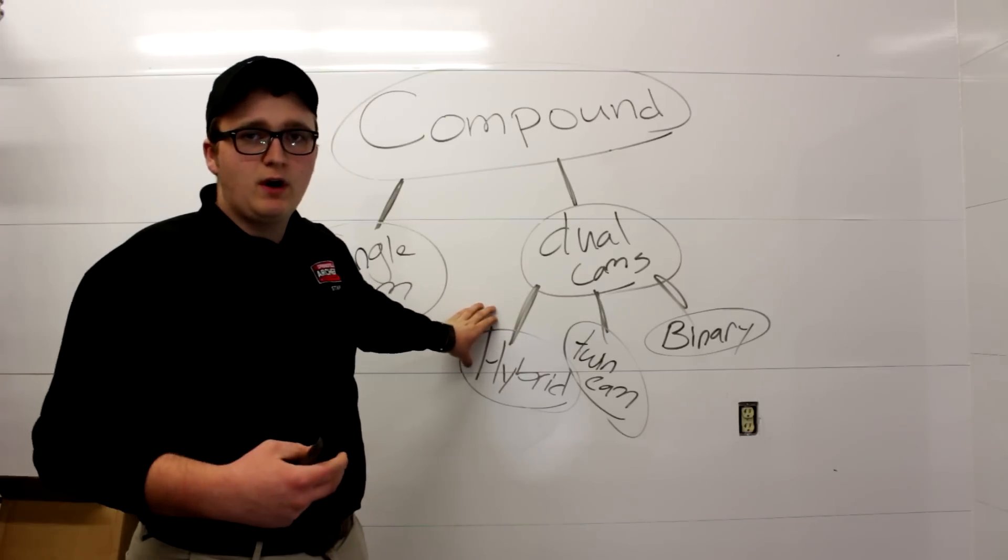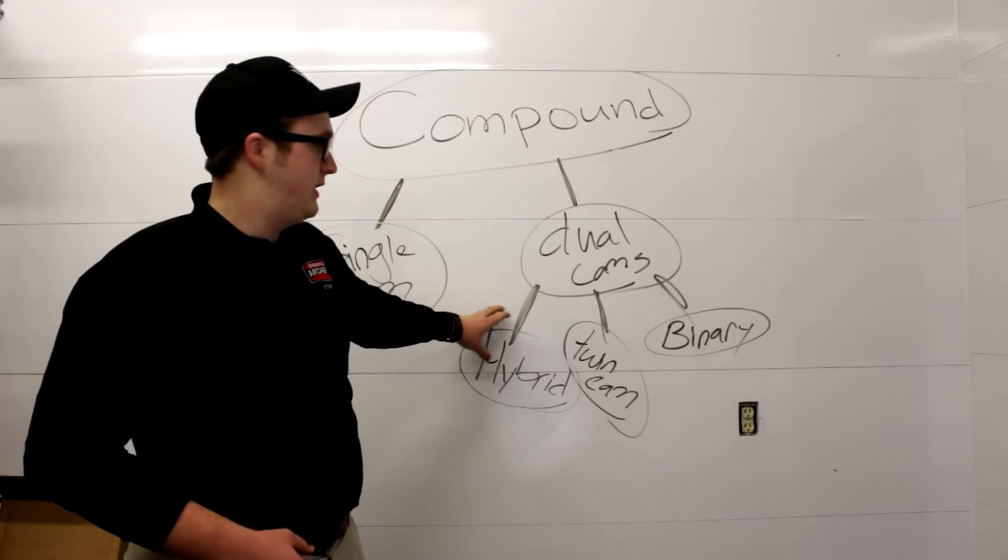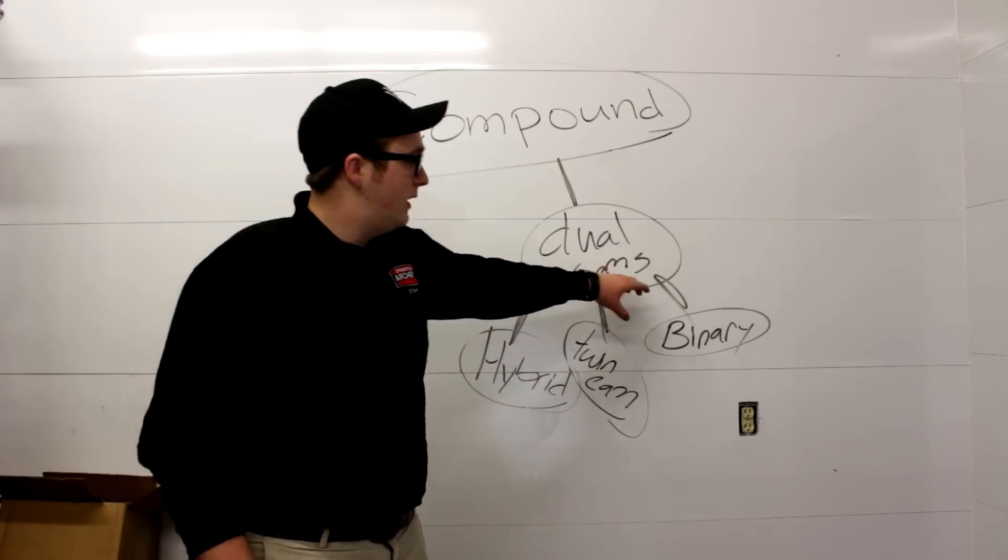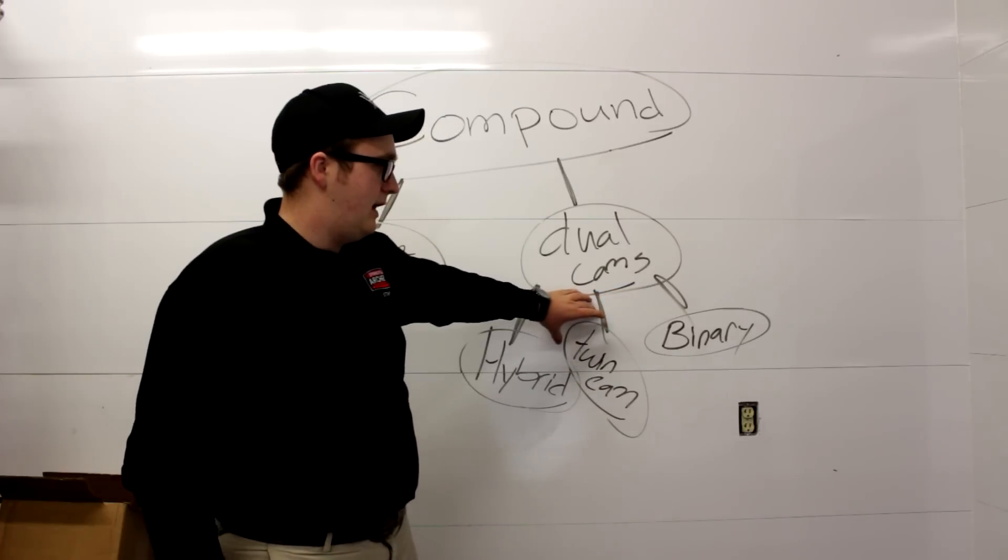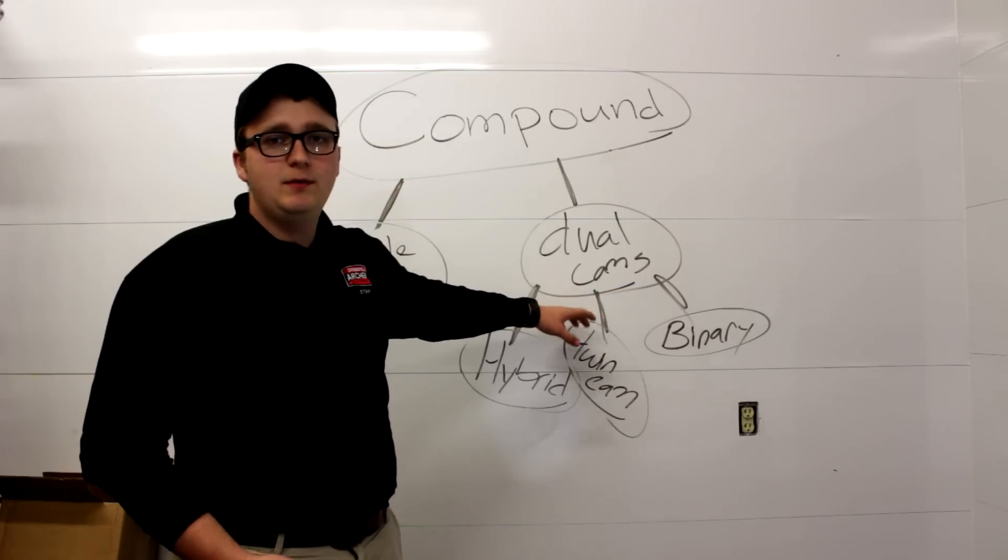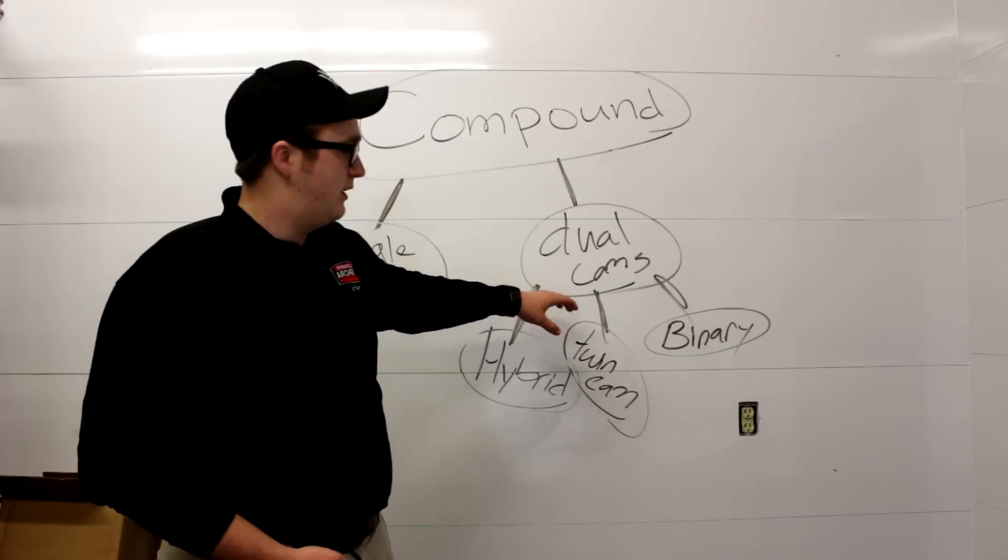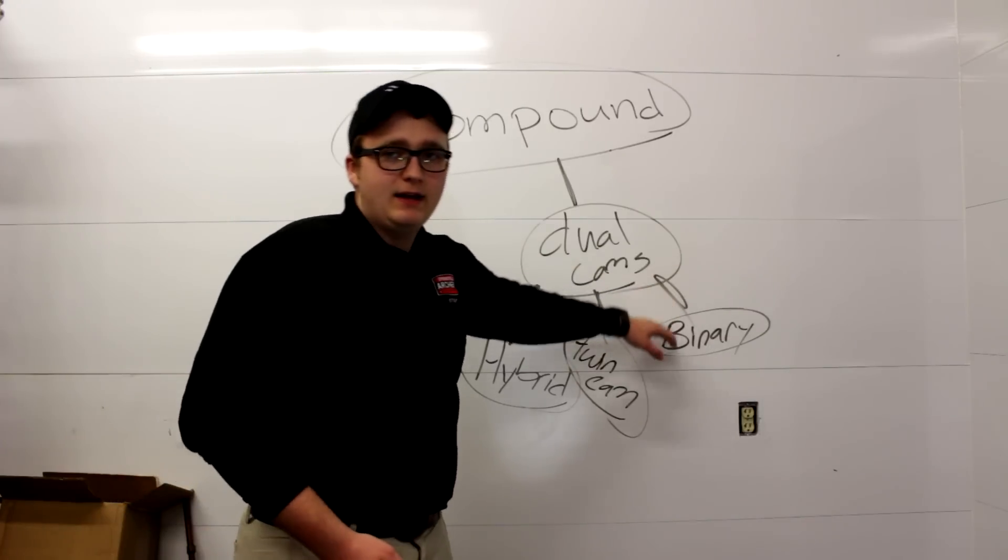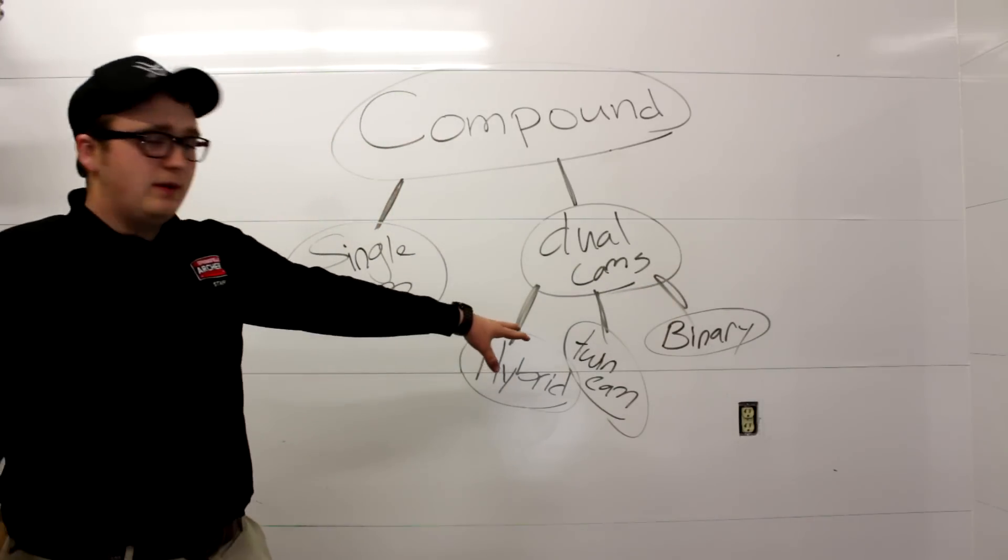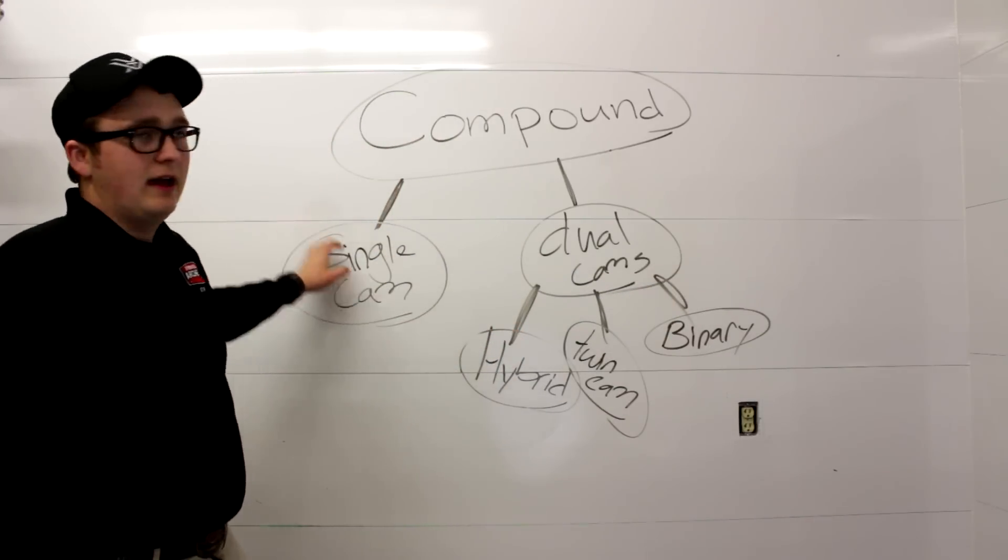That's split up into three different branches. You got your hybrid cam which I would argue is most predominant in today's industry. Then you've got your twin cam which is really common in youth bows, adjustable bows. It's also common in some other types of bows as we'll show here in a second. And then you've also got your binary cam system. So those are all your three dual cams and your single cam over here.